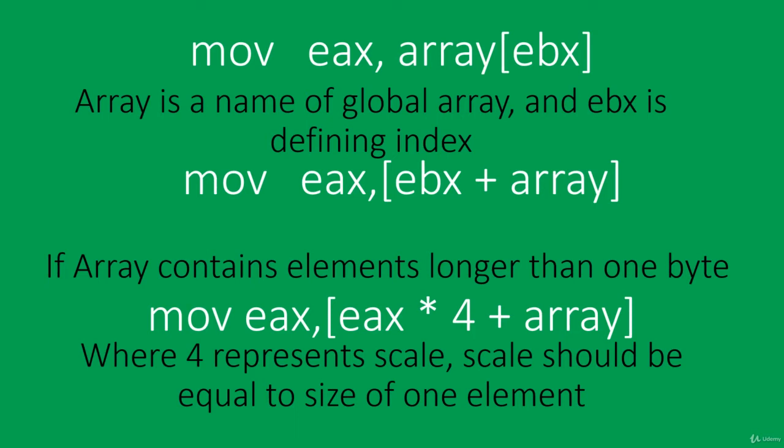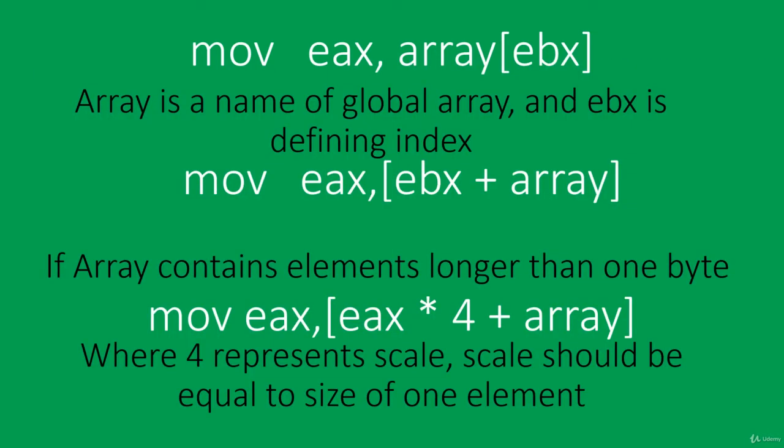This notation describes what the computer is actually doing: it adds ebx to the address of the array, then takes the value from that place and moves it to eax. Also, when working with arrays that contain elements of a type longer than one byte, we use something called scale.